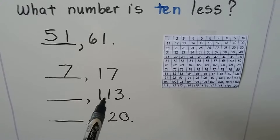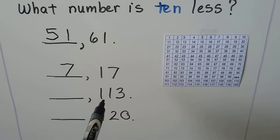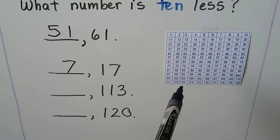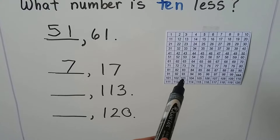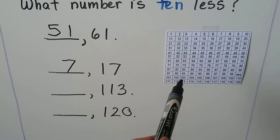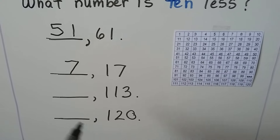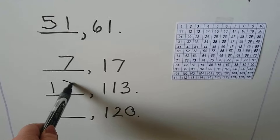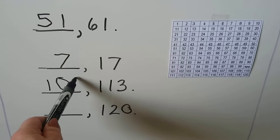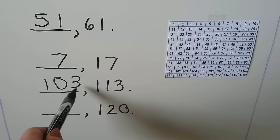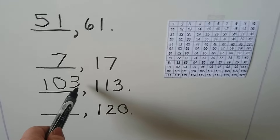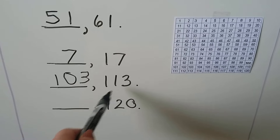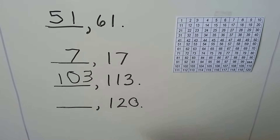What number is 10 less than 113? We find 113 on the chart and go up one row — it's 103. The ones place stayed a 3, and the tens place went from a 1 to a 0.